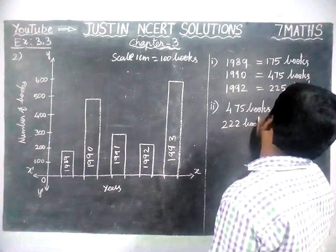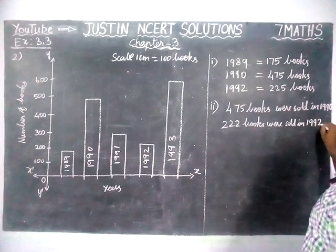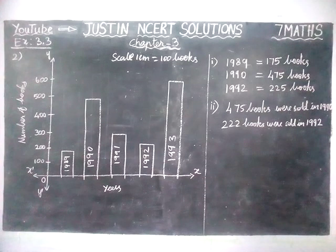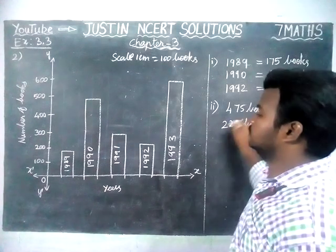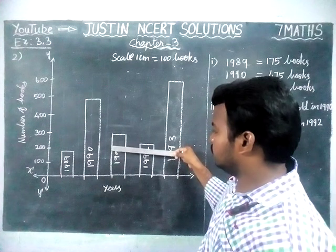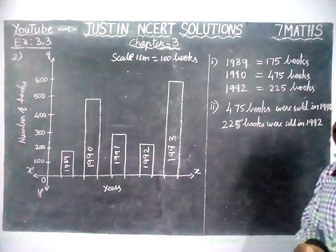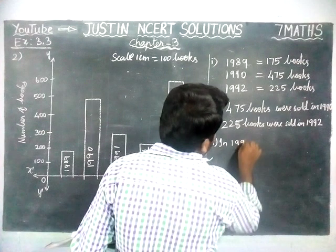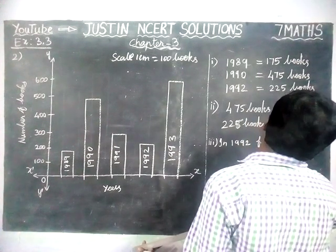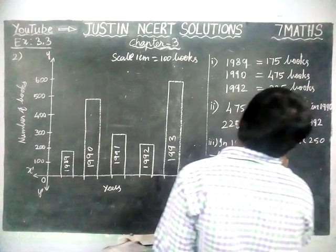225 books were sold in 1992. Third question: In which year were fewer than 250 books sold? Fewer than 250 — you can check it. This is most probably between 200 and 250, so we take 1992. In 1992, fewer than 250 books were sold.